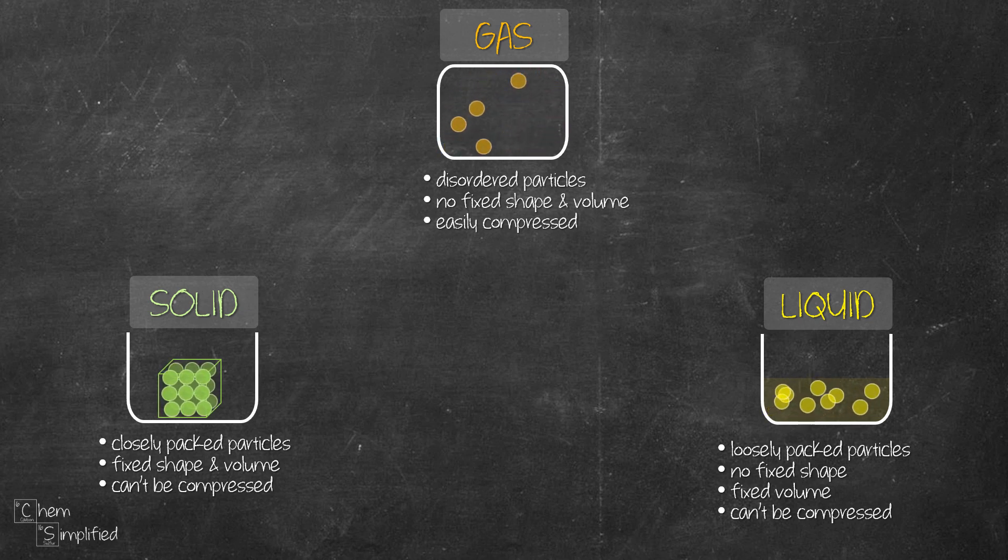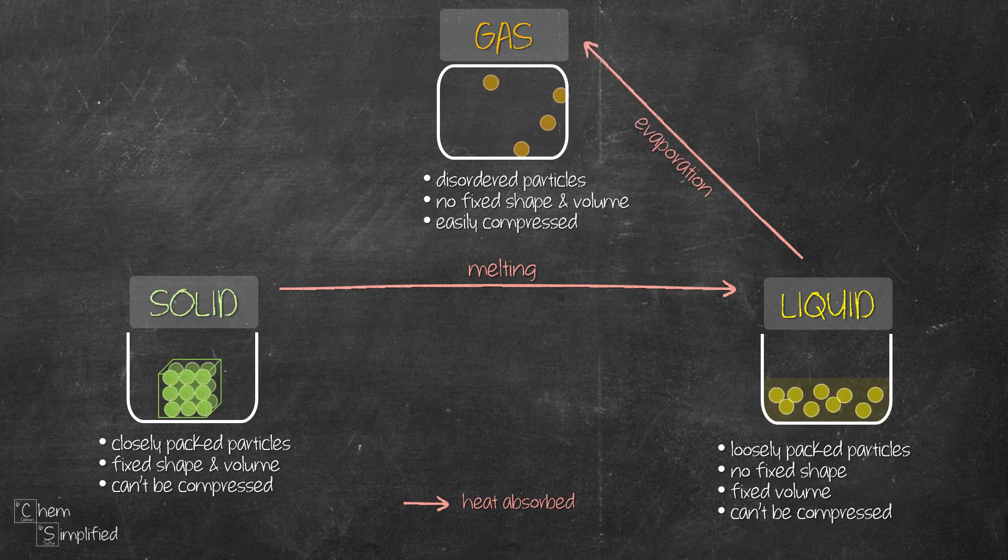Now that we know about the three states of matter, let's see what happens when heat is added to one of the states. When heat is added to solid and is absorbed by the solid particles, the solid particles will undergo melting to become liquid. This is like when we have ice and we expose it to heat. The ice particles will absorb the heat and then it will melt to become liquid, which is water. And if we heat our liquid long enough, it will undergo evaporation to become gas. That is like heating water and then it becomes water vapor.